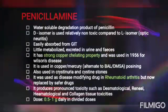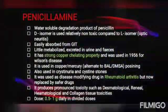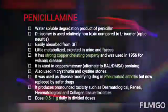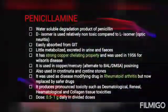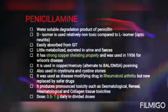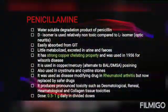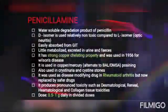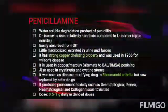The next drug is penicillamine. It is a water-soluble degradation product of penicillin. The D-isomer is used since it is non-toxic compared to L-isomers, and it is easily absorbed from the gastrointestinal tract. It is metabolized and excreted through urine or feces. It has strong copper chelating properties and was used in 1956 for Wilson's disease. It is used in copper and mercury poisoning as an alternative to dimercaprol or DMSA. It was also used in cystinuria and cystine stones, and as a disease-modifying drug in rheumatoid arthritis, but has now been replaced by safer drugs. It produces pronounced toxicity including dermatological, renal, hematological, and collagen tissue toxicities. The dosage is 0.5 to 1 g daily in divided doses. Penicillamine selectively chelates copper, mercury, lead, and zinc.